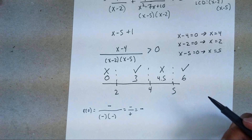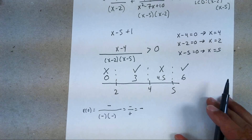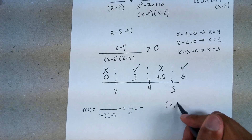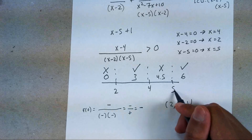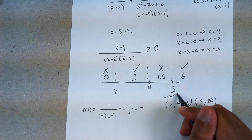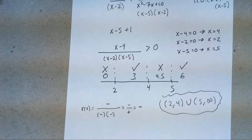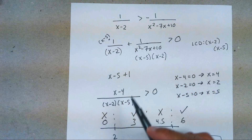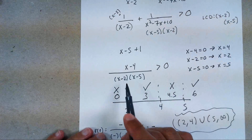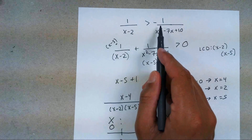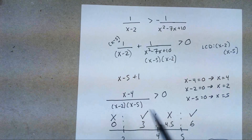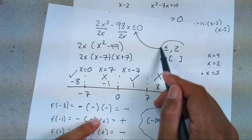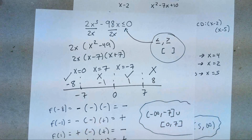Now express the answer in interval notation. What worked out? Two to four, and five to infinity. So the answer is (2, 4) union (5, ∞). Any time you have a rational expression, make sure you get an LCD to simplify to one expression, bring everything to the left-hand side so you can factor it out, and any time it's a greater than or equal to or less than or equal to, make sure you put brackets. Thanks for watching — I hope it helped.